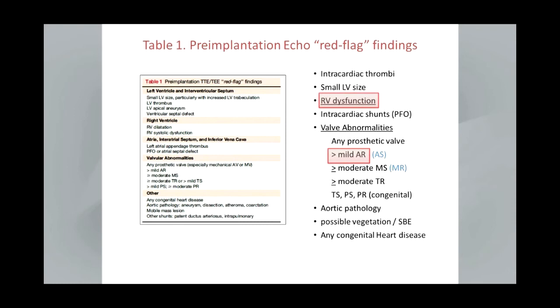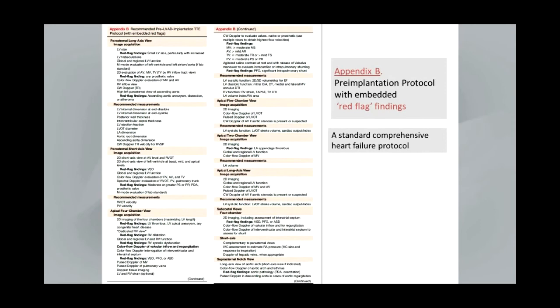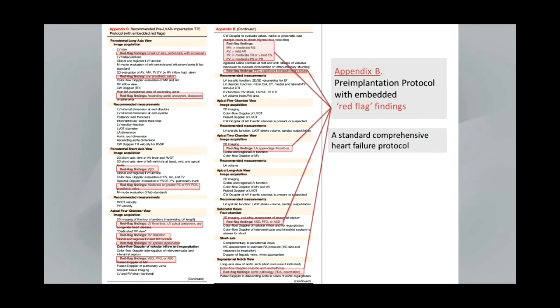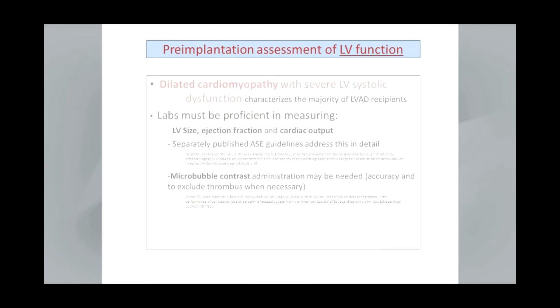A table in the document is the pre-implantation echo red flag findings — a helpful little table you could take to a machine to realize that the things shown are problems that should really receive careful attention if LVAD is being considered. The most important of these are the presence of RV dysfunction and greater than mild aortic regurgitation. This is a pre-implantation protocol with red flag findings embedded so that as you work through the standard protocol, you would be aware of things that might really be red flags requiring further investigation and should be brought to the attention of the heart failure doctor or the surgeon.